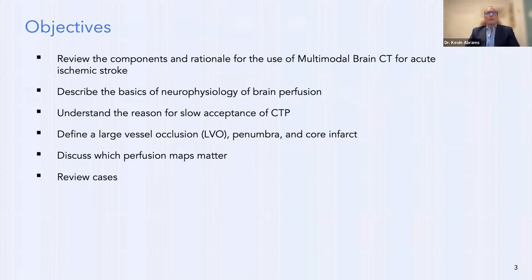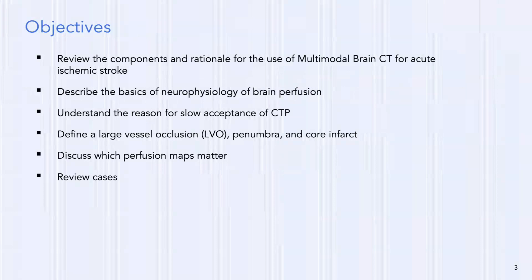The objective is to review the components and rationale for the use of multimodal brain CT for acute ischemic stroke. We want to describe the basics of the neurophysiology of brain perfusion, understand the reason for the slow acceptance of CT perfusion — we were doing it 22 years ago and it only really started catching on about the past seven years or so — define a large vessel occlusion, ischemic penumbra, and core infarct.